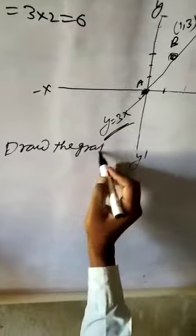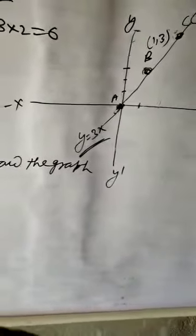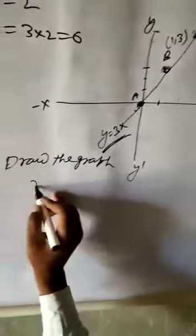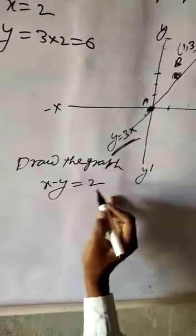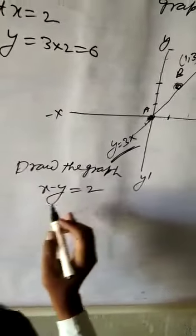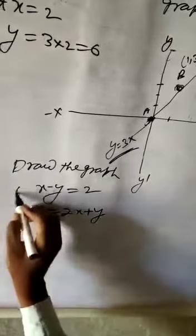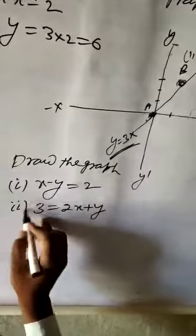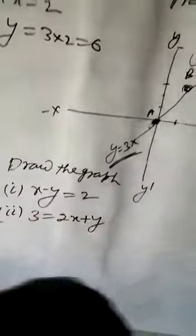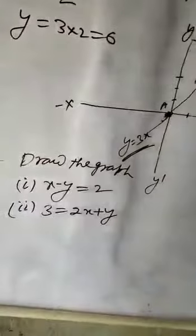Draw the graph x minus y equal to 2. 3 equal to 2x plus y. This is homework. Draw the graph with the same method. OK. Thank you.